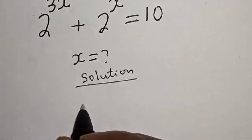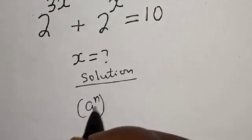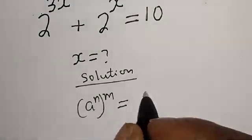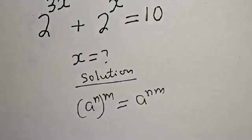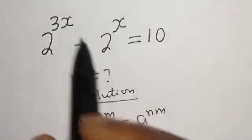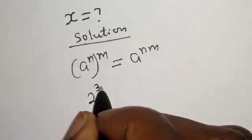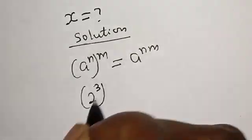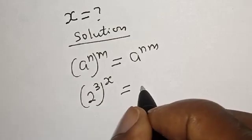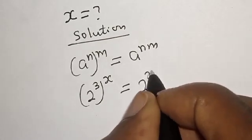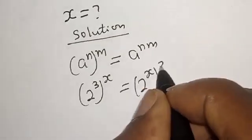Take note of this rule: a raised to power n, to the power of m, is equal to a raised to power nm. Then, 2 raised to power 3s can be written as 2 raised to power 3, to the power of s, which is equal to 2 raised to power s, to the power of 3.